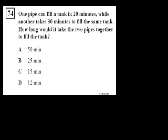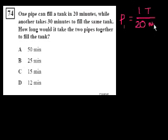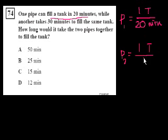Next question, problem 74. One pipe can fill a tank in 20 minutes, so pipe 1's rate equals 1 tank per 20 minutes, or 1/20 tank per minute. Another pipe takes 30 minutes to fill the same tank, so pipe 2's rate equals 1/30 tank per minute.